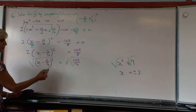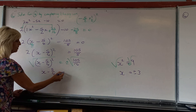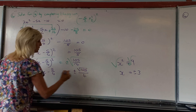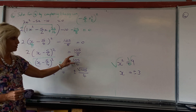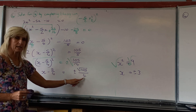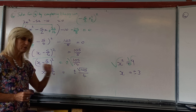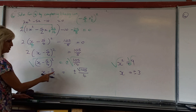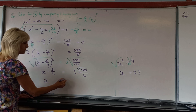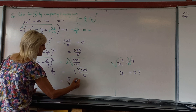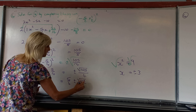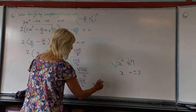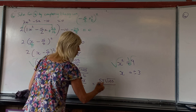After square rooting, X minus 5 over 4 equals plus or minus the square root of 105 over 16. The bottom is a perfect square, so the root of 16 is 4 and comes out. The 105 stays under the root. Then to isolate X, add 5 over 4 to both sides, giving X equals 5 over 4 plus or minus root 105 over 4, which can be written as one fraction: X equals 5 plus or minus root 105, all over 4.